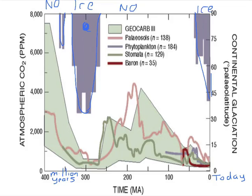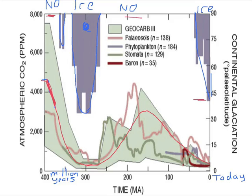Shown below is the history of CO2. What you'll notice is when there was no ice, CO2 was high — and this is estimated in various ways. You have this high CO2 back here in a no-ice time. And then when CO2 got low, the ice had grown. And when CO2 went back up to being high, the ice had melted away. And when CO2 got low again, the ice had grown back. There's actually a little dip in CO2 right here that goes with this little blip of ice.